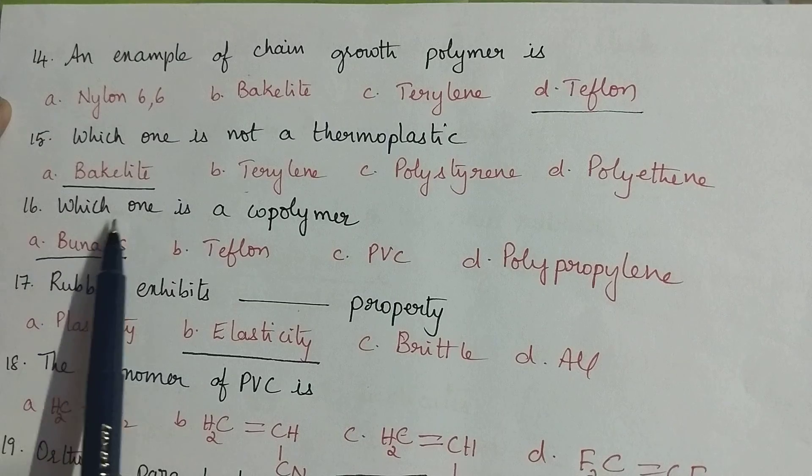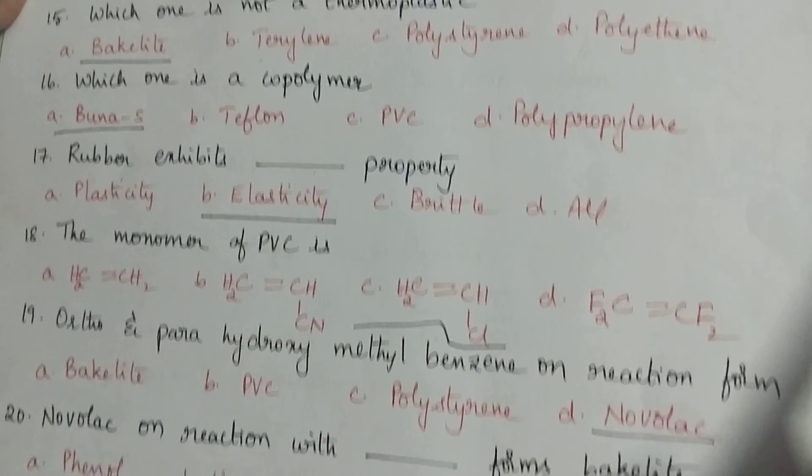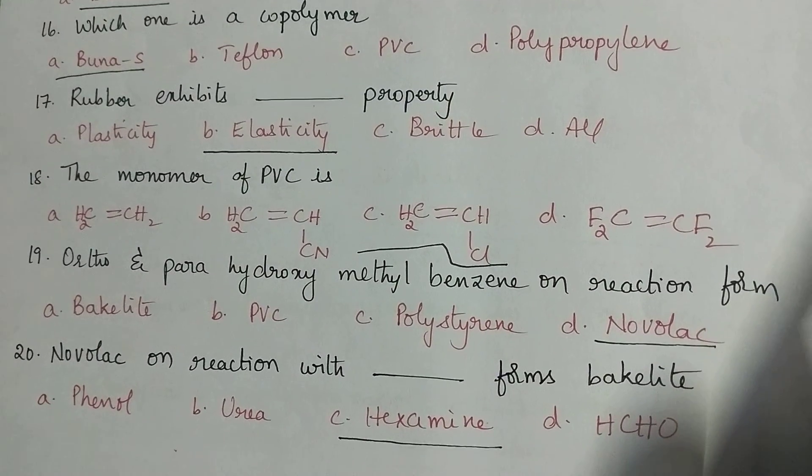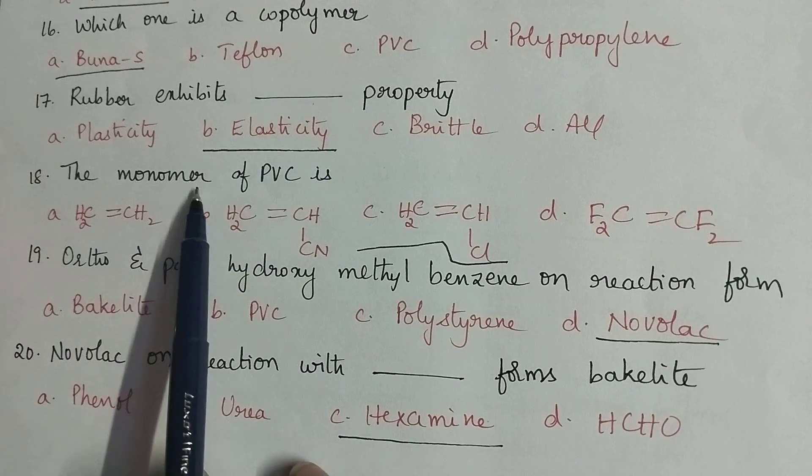Which one is a copolymer? Buna-S is a copolymer. Rubber exhibits dash property. Rubber exhibits elasticity.